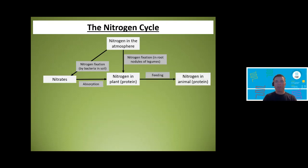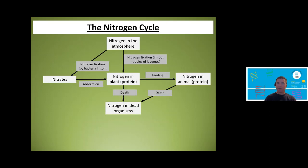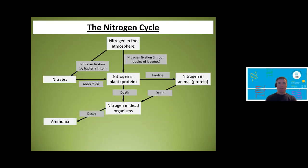What happens to the nitrogen in the plant? Just like in the carbon cycle, it's passed on to animals. When animals eat plants, they consume protein within them and use those proteins to form new proteins in their own bodies — giving us nitrogen in animals. Just like the carbon cycle, plants and animals die, and we end up with nitrogen in dead organisms. If you've got a dead animal, there is still lots of nitrogen within that body, and it needs to be recycled and returned to the soil.